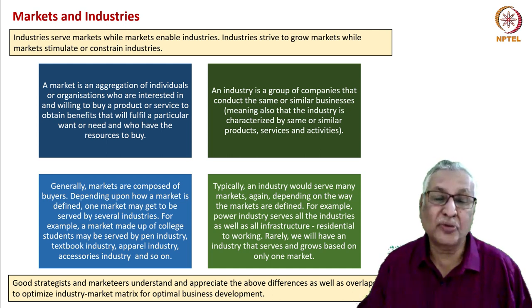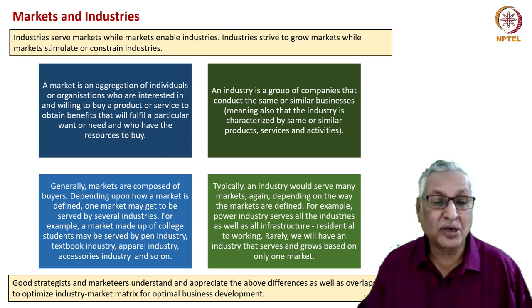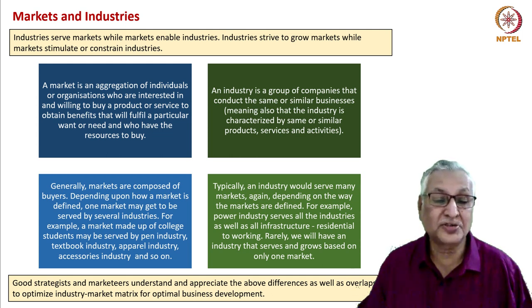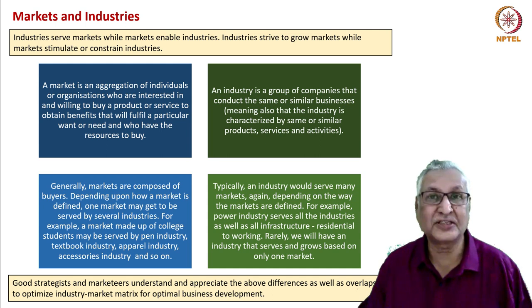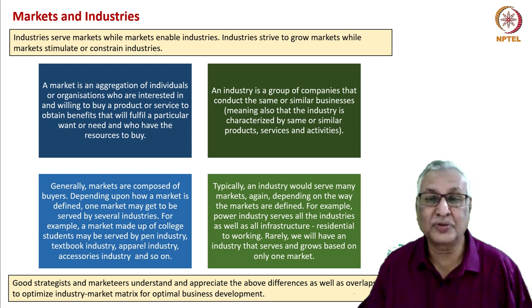Generally, markets are composed of buyers, and one market may be served by several industries. For example, a market made up of college students may patronize goods from different industries — the pen industry, the textbook industry, the stationery industry, the apparel industry, the accessories industry, the movie industry, and so on. One market can be served by many industries.